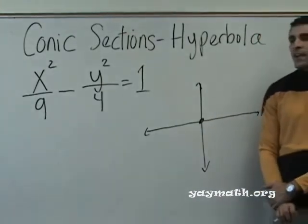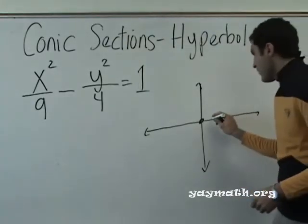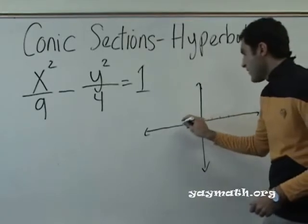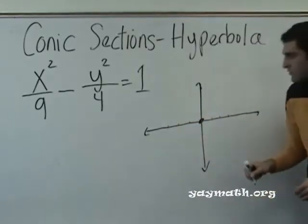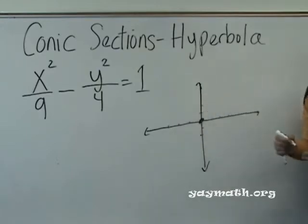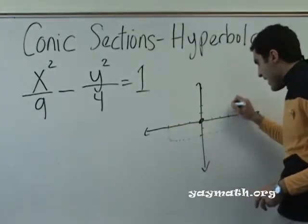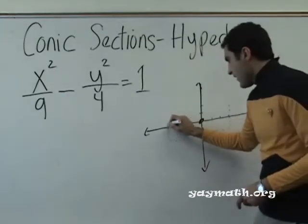So, we start here. Then, where do we go? Left and right, how far? Three. Three. Left and right. One, two, three. One, two, three. How far up and down? Two. Two. Good. One, two. One, two. Now, once we create our boundaries, we make a little rectangle, a little box. So, just make a little box with a dotted line, like that.